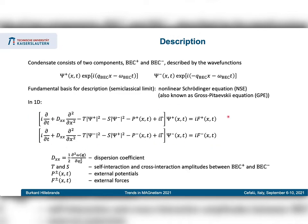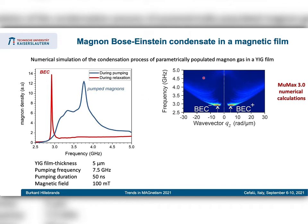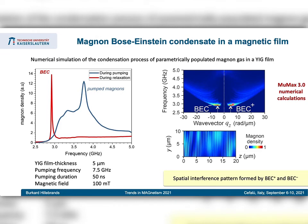Solving these classical equations gives us the magnon density as a function of frequency. During pumping you get a certain distribution, and after waiting for relaxation the BEC forms a very sharp peak. With two wave functions, you should of course see interference — and indeed in the computer simulation, interference is found. Even more: vortex formation is observed, which was found experimentally by the Münster group some time ago and is now reproduced in these calculations.